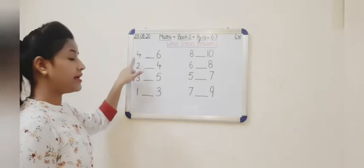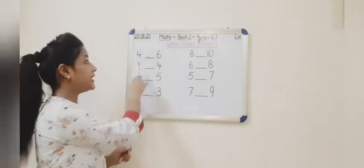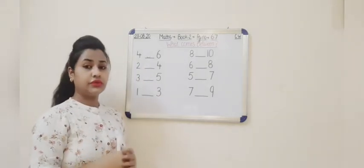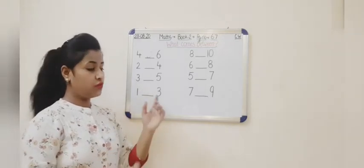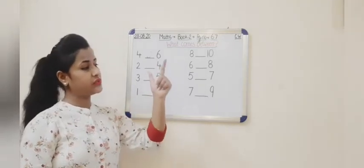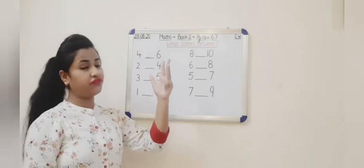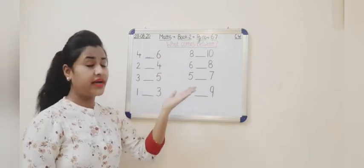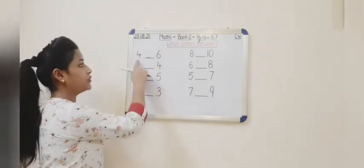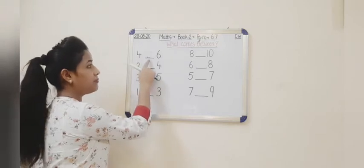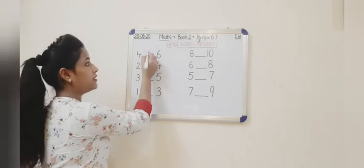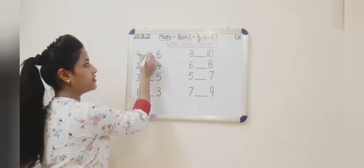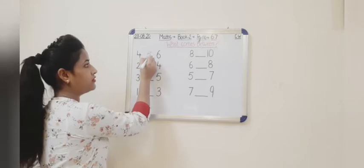So students, tell me which number is written over here? It is number 4. So do you know which number comes after 4? Start counting: 1, 2, 3, 4, then 5. In the same way, we have to find which number comes between 4 and 6. Which number will come? 5. Which number will come after 4? 5.